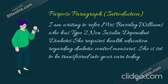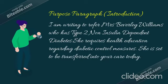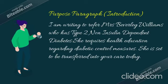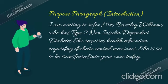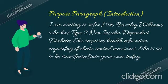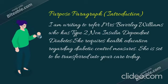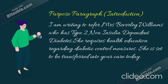The next important paragraph is the introduction, also called the purpose paragraph. Here we write three sentences: first, introducing the patient and their present medical condition; second, the requirement; third, the discharge or transfer status. For example: 'I am writing to refer Mrs. Beverly Williams who has type 2 non-insulin dependent diabetes. She requires health education regarding diabetes control measures. She is to be transferred into your care today.'